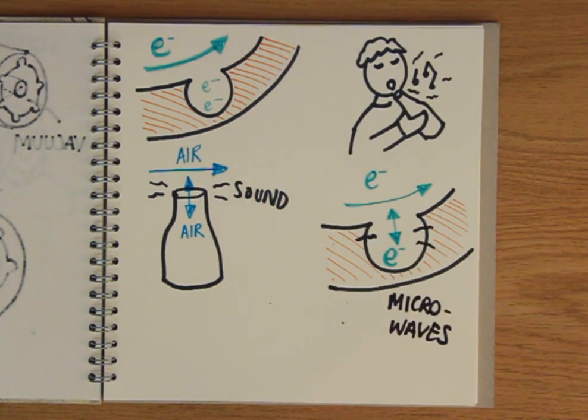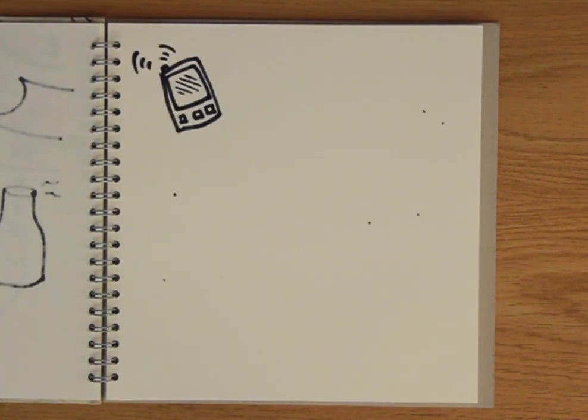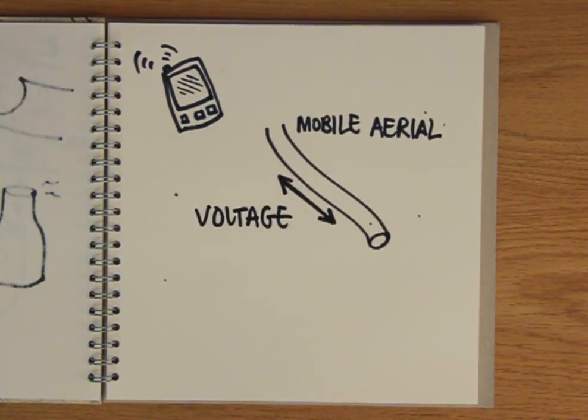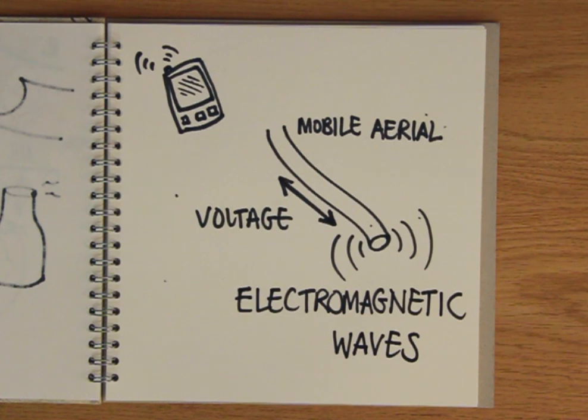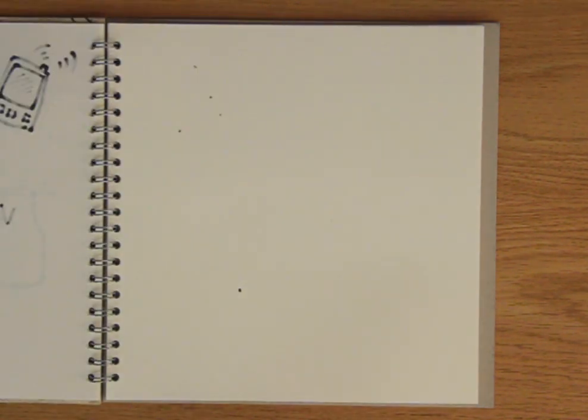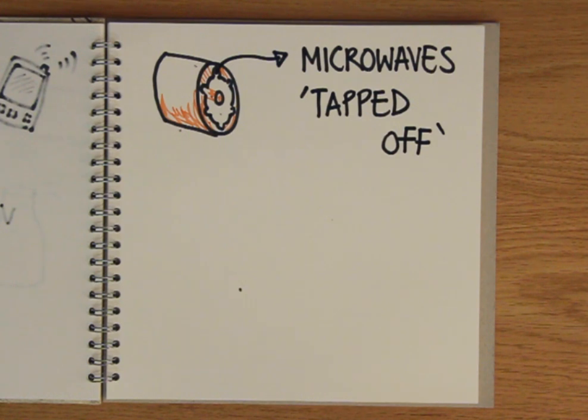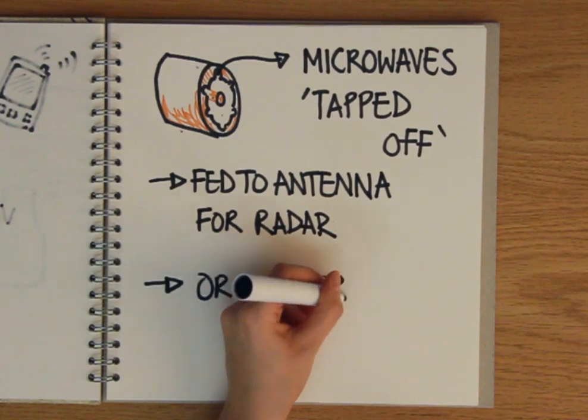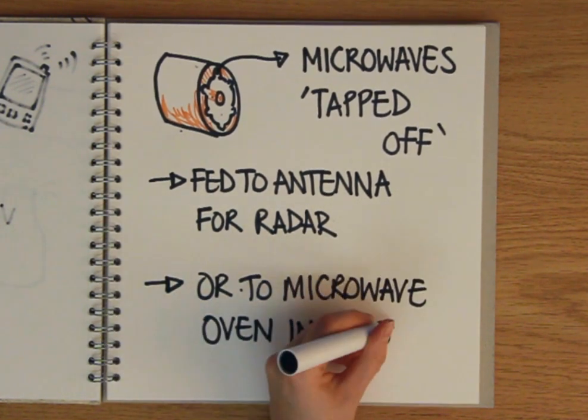This is a similar way to how a mobile phone aerial works. When you have a rapidly changing voltage in the wire that forms the aerial, the wire produces electromagnetic radiation that allows you to communicate. The microwaves produced are then tapped off from one of the cavities. In a radar device, they're fed to the antenna for transmission, and in a microwave oven, they're directed into the oven interior to cook the food.